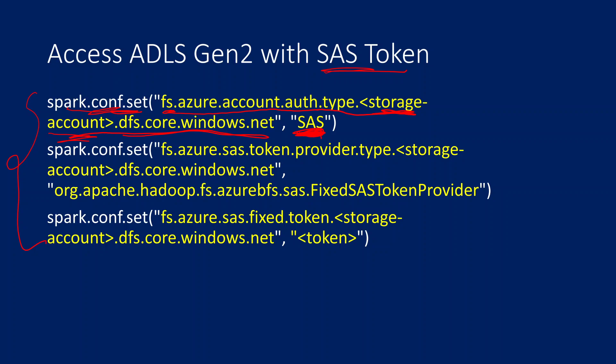The second key is: fs.azure.sas.token.provider.type.<storage-account-name>.dfs.core.windows.net. Using this key we tell the cluster what the provider of the SAS token is, so it knows how to authenticate and read or write data.